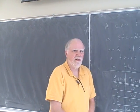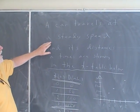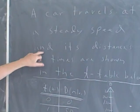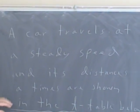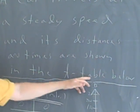To introduce the concept of the derivative, I'm going to start with a real simple model here. I've got a car that travels at a steady speed, and its distances and times are shown in the t-table below.